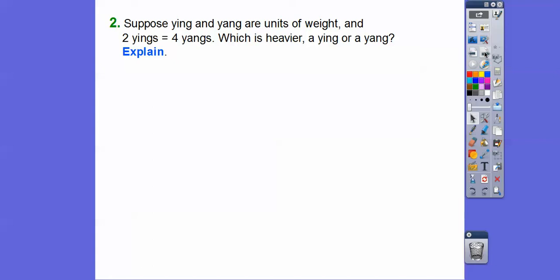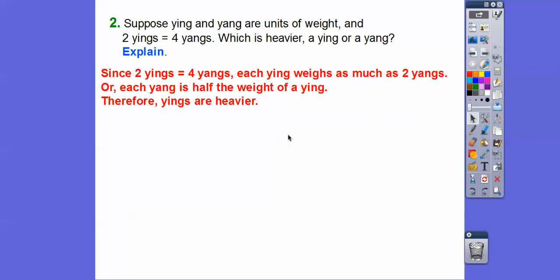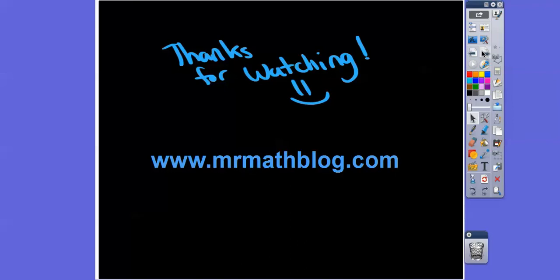A tricky question right here. Suppose ying and yang are units of weight, they're not, it's just a twist of words, and suppose that 2 yings equals 4 yangs. Which is heavier, a ying or a yang? Well, since 2 yings equals 4 yangs, each ying weighs as much as 2 yangs, or each yang is half the weight of a ying. Therefore, yings are going to be heavier. I hope that makes sense. Take care, thanks for watching.